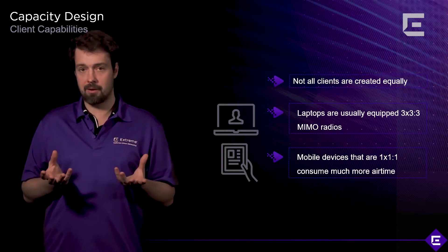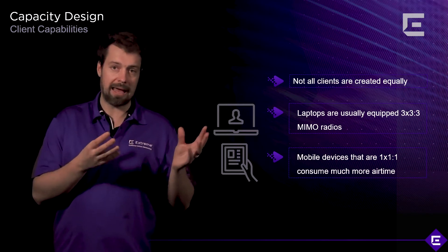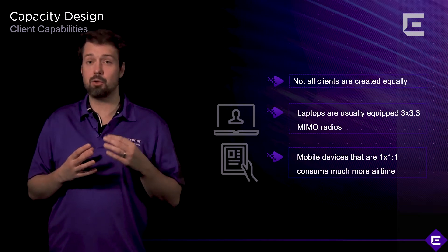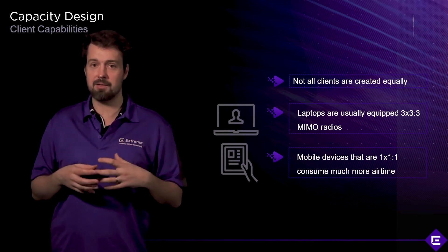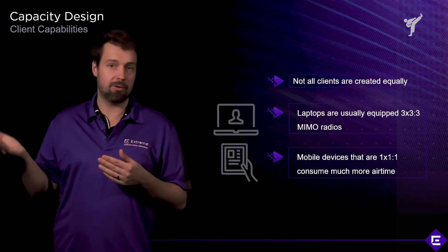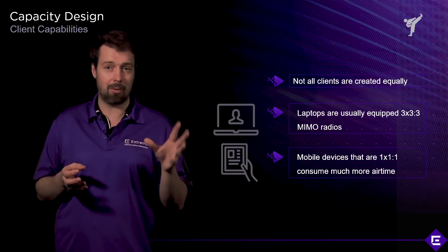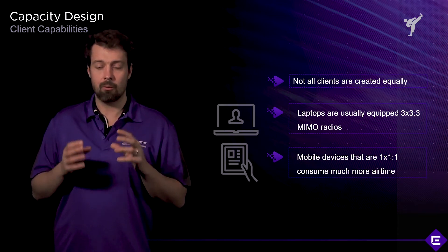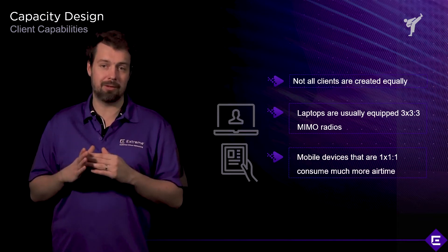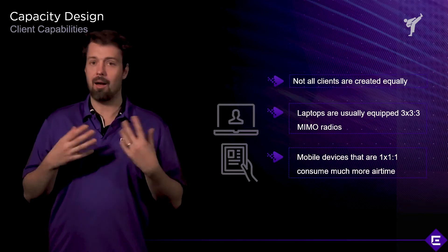One of the things that becomes apparent when you deploy Extreme Cloud IQ and look at the client population is that we mostly live in a 2x2 world. Most of the devices on our networks are actually 2x2 through 2. Some of them might be 3x3, like more powerful laptops, but the majority are going to be 1x1 or 2x2, which immediately tells you something about the access points and access point configuration you will need to select for your network.